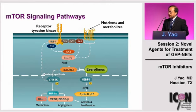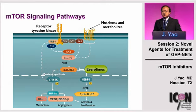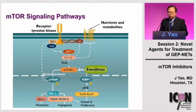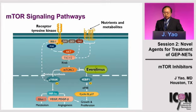There are actually no known mutations in mTOR in human cancers, but dysregulation of the pathway is fairly common. Everolimus is an orally available mTOR inhibitor that binds to FK-binding protein 12, and in turn inhibits the mTOR pathway.